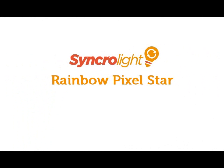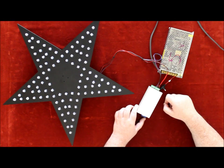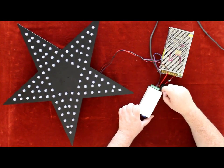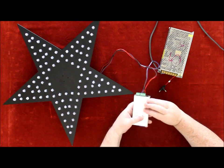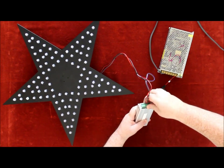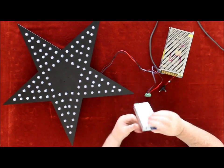Hi, welcome to Syncrolight product videos. In this video we will teach you how to set up and run your product. This is our Pixel Star. To operate it, you need an SD card controller with sequences on board the SD card to control our pixels.